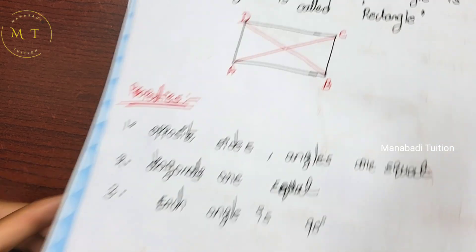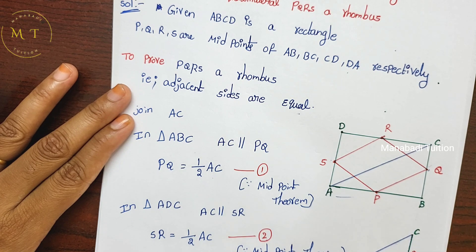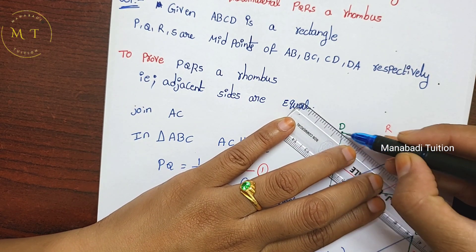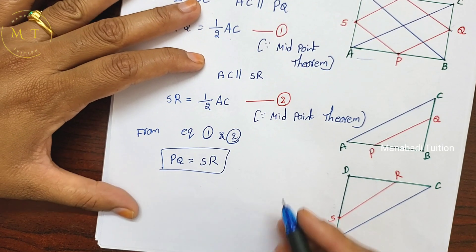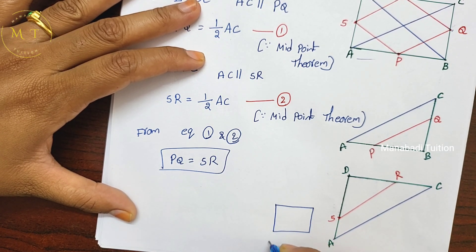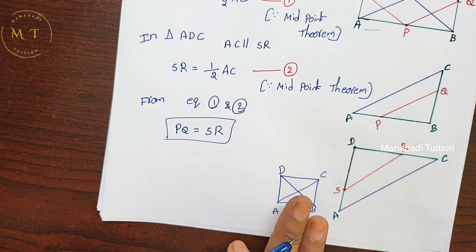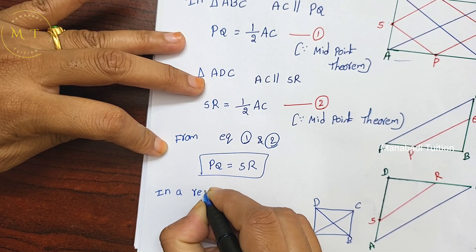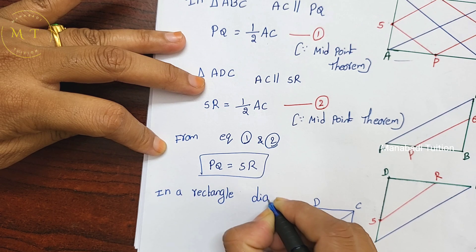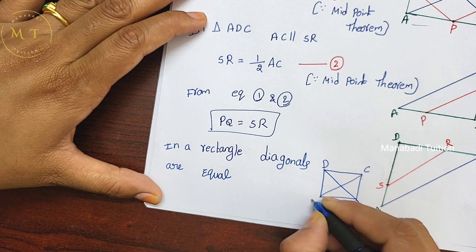Now use the rectangle property: the diagonals of a rectangle are equal. In rectangle ABCD, diagonal AC and diagonal BD are the two equal diagonals. So AC equal to BD. This is the rectangle property — the two diagonals are equal.